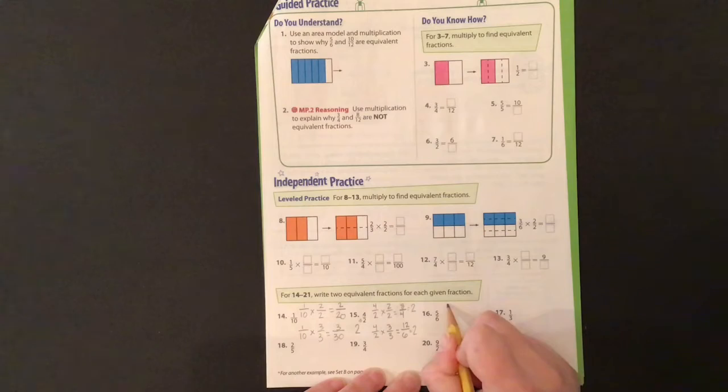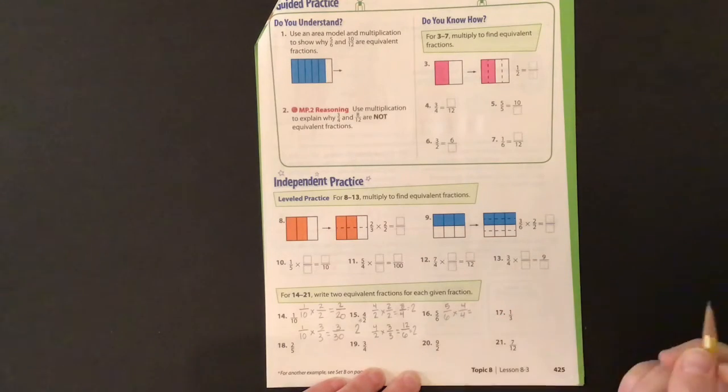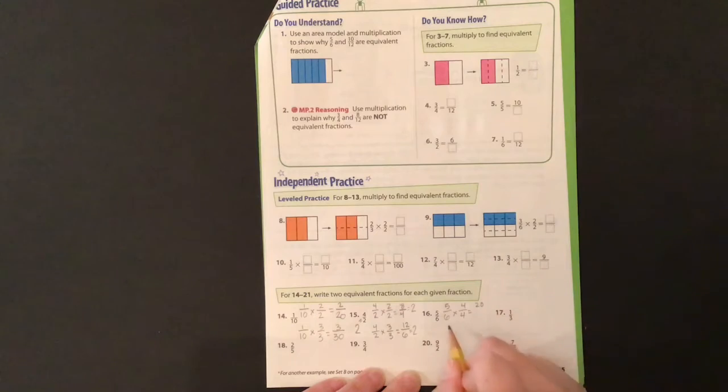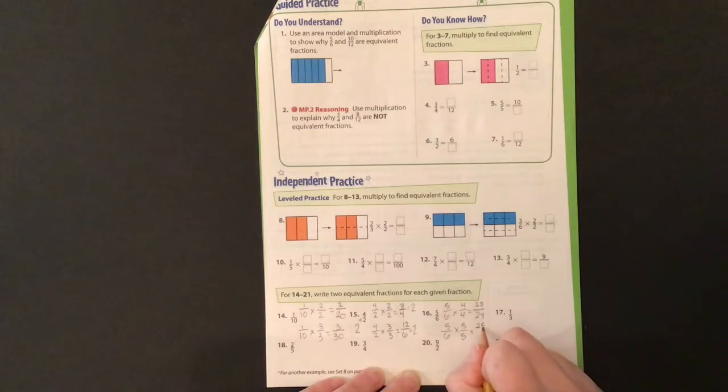Okay, we'll go ahead and do 1 more. 5 6ths times, you can change it up a little if you want, I'll do 4 4ths this time. 5 times 4 is 20, and 6 times 4 is 24. So 20 24ths. Then I'll go ahead, I like 5, so 5 times 5 is 25, 6 times 5 is 30. 5 6ths, 20 24ths, 25 30ths. These are all equivalent fractions.